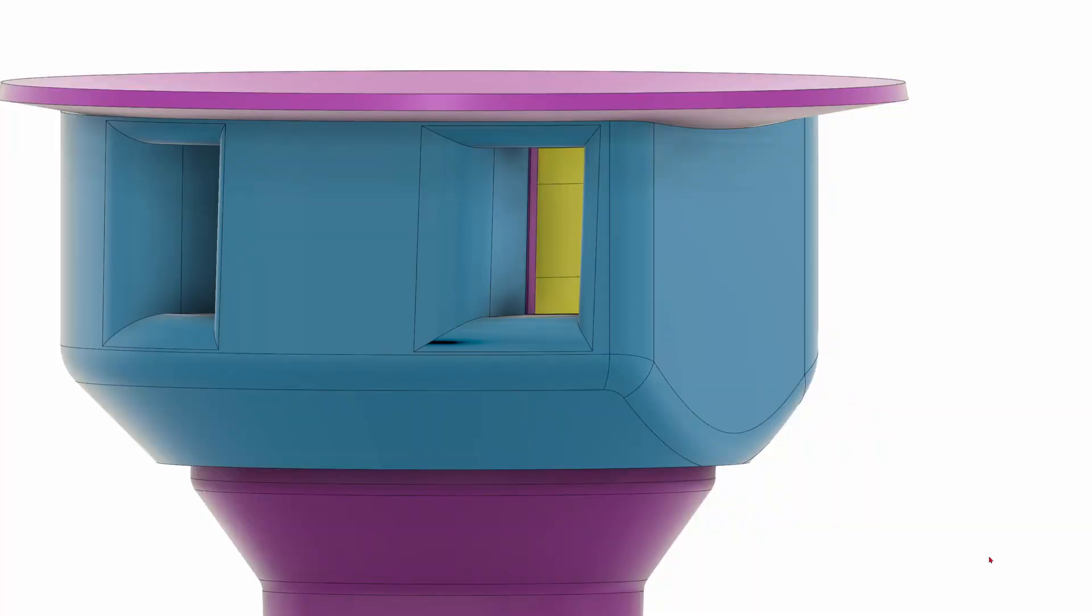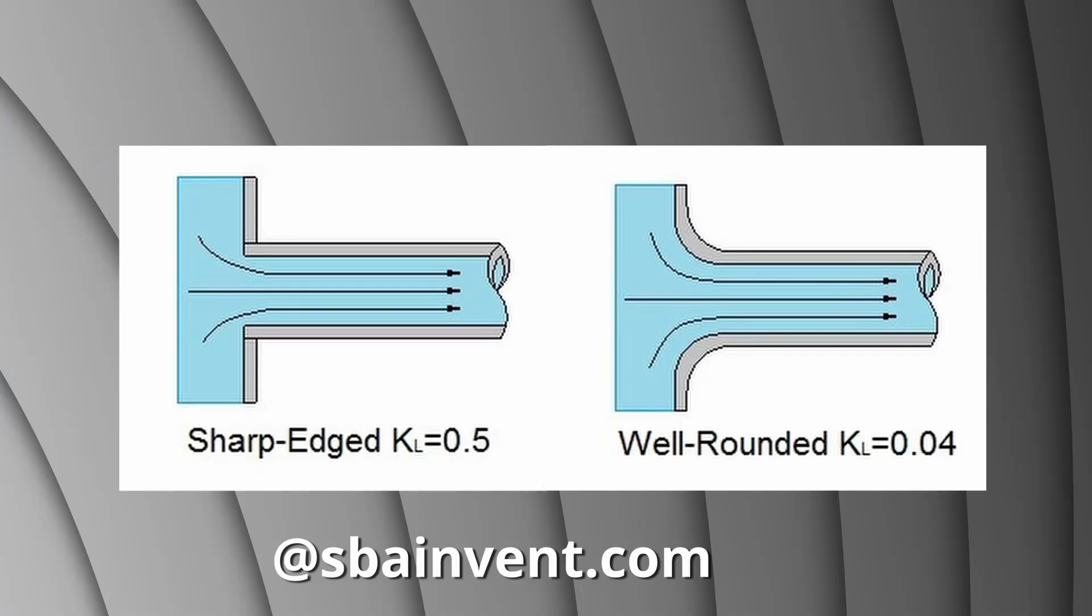Finally, we smooth the corners of the inlets as much as possible. This can reduce the pressure loss by a factor of 10 or more.